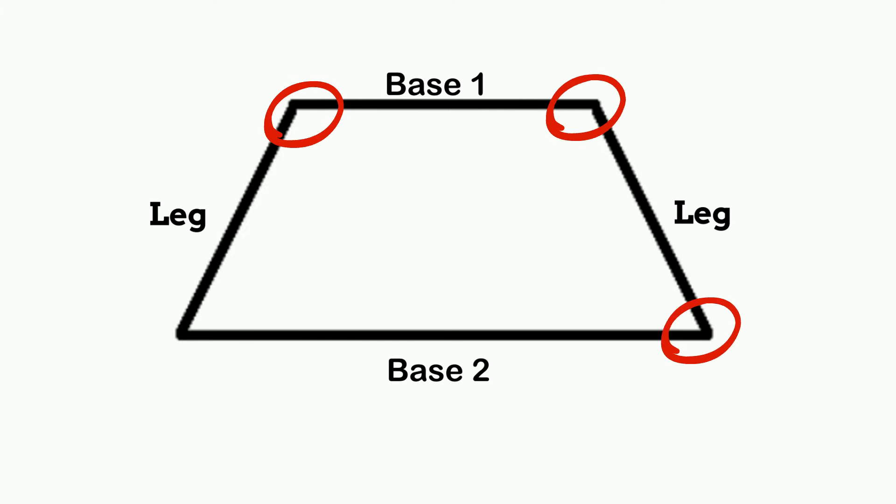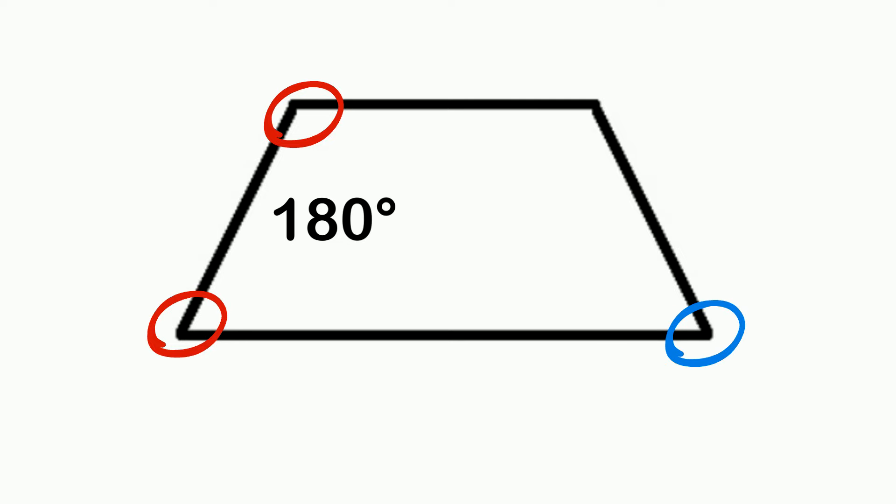The sum of the interior angles of a trapezoid equals 360 degrees. The angles on each side are supplementary, which means they add up to 180 degrees.